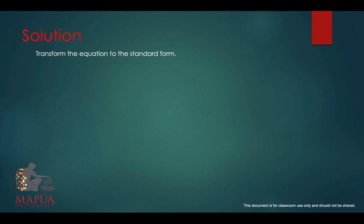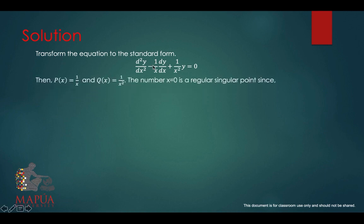We transform the equation to the standard form to determine the regular singular points. Multiplying the whole equation by x squared, we get 1 here and then minus 1 over x for the second term plus 1 over x squared for the third term. Take note that p and q are not defined at x equals 0. Therefore, x equals 0 is a singular point.